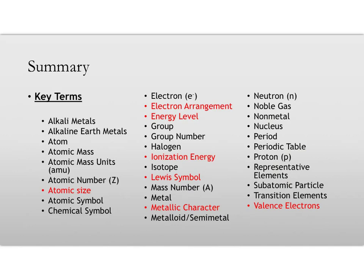All right, so in this lesson, I've talked about the atomic size and the trends on that periodic table, electron arrangements, energy levels, ionization energies, and the trends on the periodic table, Lewis symbols or dot structures, the trend of metallic character, and valence electrons.